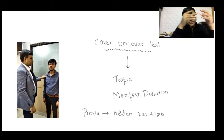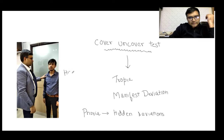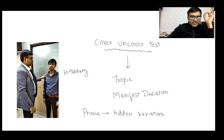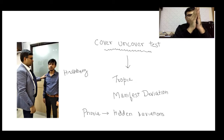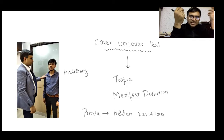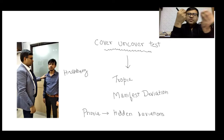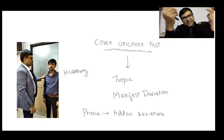There is another test that shows the amount of squint — the Hirschberg test. In the Hirschberg test, we present a torch light and observe the pupillary reflex: whether it is at the limbus, at the edge of the pupil, or at the middle of the iris. Based on the position of the pupillary reflex we can determine the amount and type of squint.